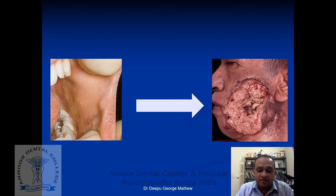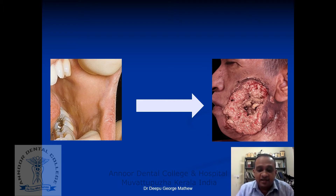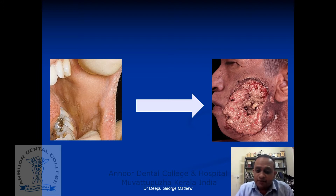Oral squamous cell carcinoma is one of the commonest cancers encountered, especially in Indian males. When you look at epidemiological studies, we will see that oral cancer or oral squamous cell carcinoma is the commonest cancer among Indian males. Even after all kinds of treatments, we are still not able to improve the prognosis. The five-year survival rate is below 50% in the case of oral cancers.